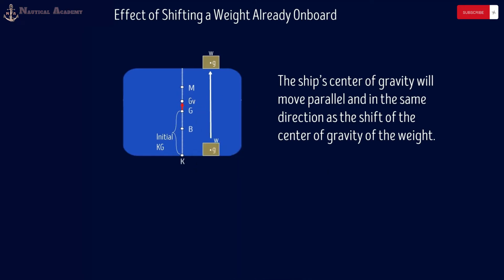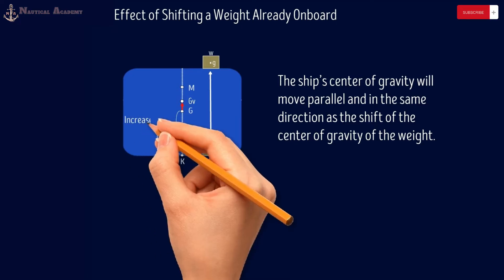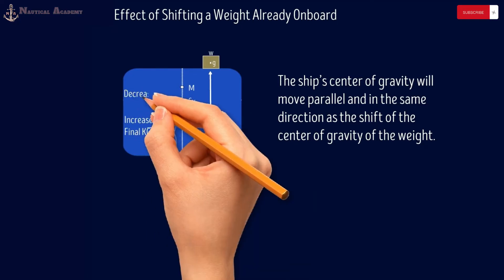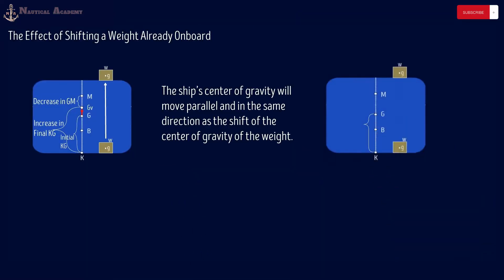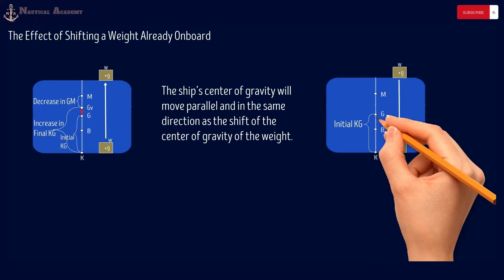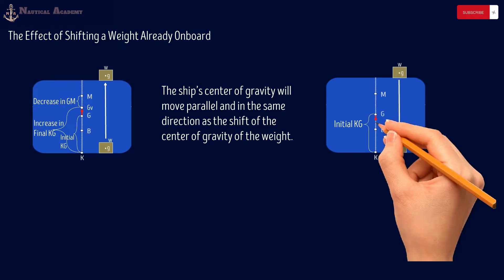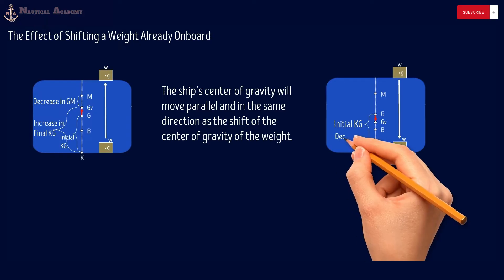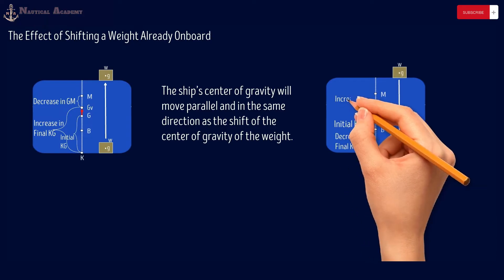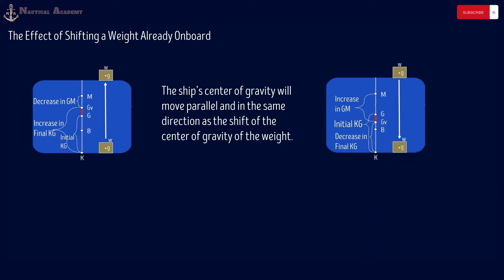The new G will be marked as GV to emphasize the vertical shift of G. In this case, there will be an increase in KG and a decrease in GM since our metacenter is above G. On the other hand, if a weight is shifted from the main deck to the lower hold, G will move downward in parallel and in the same direction as the shift. In that case, KG will decrease and GM will increase.